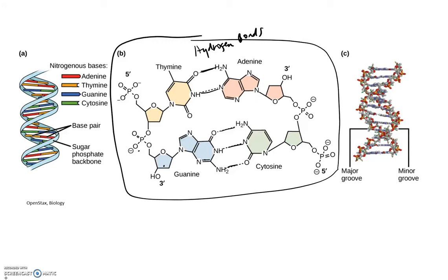We have three hydrogen bonds between guanine and cytosine holding those together. Now, guanine and cytosine actually has a stronger bond than adenine and thymine just because there are three hydrogen bonds versus two.